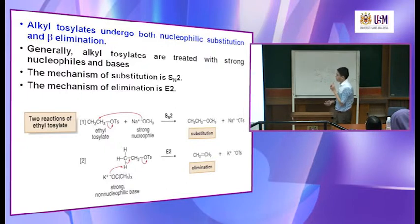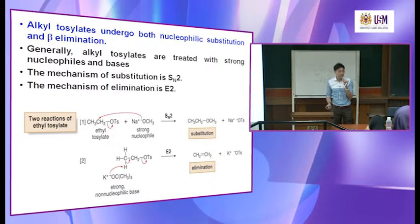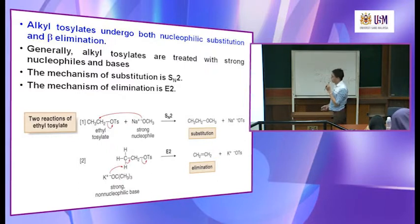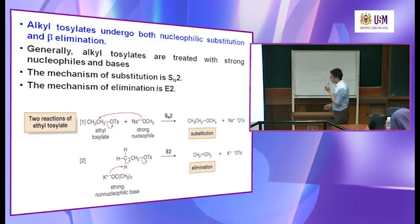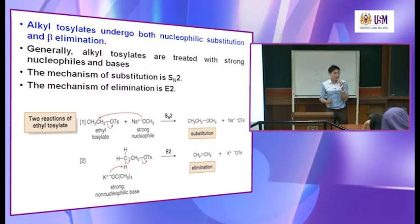The nucleophile attacks the slightly positive carbon here and OTs leaves as a group, and you form an ether. The second case: if you use a strong bulky base — potassium tert-butoxide — a bulky base will prefer E2 reaction. It attacks the beta hydrogen. This carbon is alpha, this is beta carbon, and this is the beta hydrogen, so it undergoes beta elimination reaction.